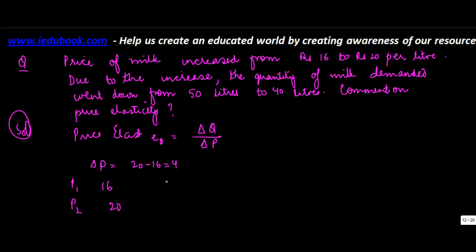That is equal to 4. Similarly, for quantity, Q1 was equal to 50, Q2 is equal to 40, so Delta Q is equal to 50 minus 40, which is equal to 10.